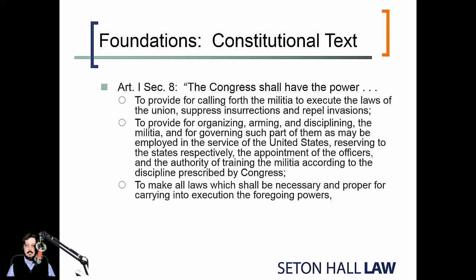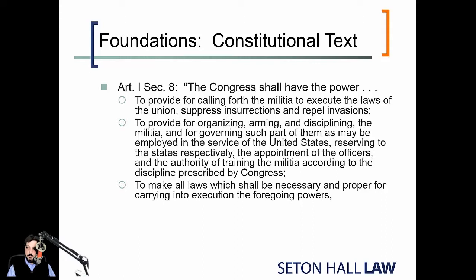Kind of at the end of all of the enumerated powers — and there are a number of other enumerated powers in Article I, Section 8 that don't directly address war power or the armies or militia — it indicates as a catch-all that Congress has the authority to make all laws which shall be necessary and proper to carry into execution all of the other foregoing powers.